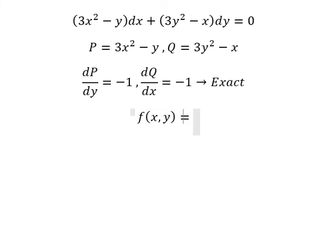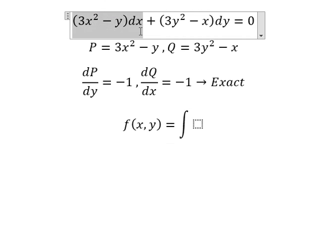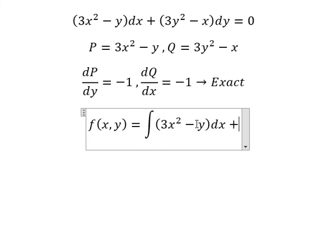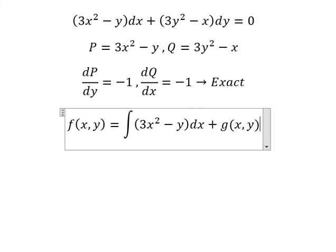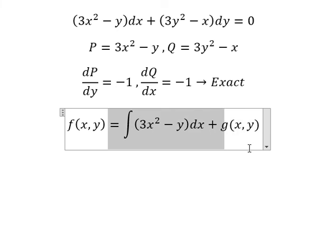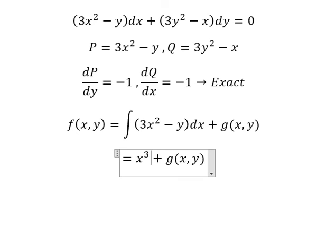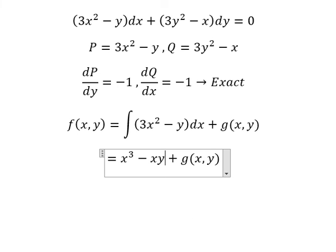Next, we need to set up the function F(x,y) equal to the integral. We choose to integrate this expression. We need to do the first derivative of F with respect to X, plus 3xy. The integral of 3xy with respect to X gives us x³ here, and the integral of y with respect to x gives us xy here.